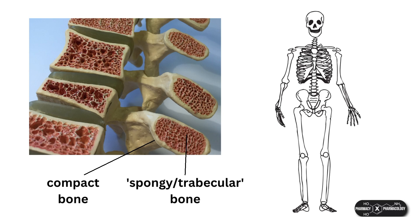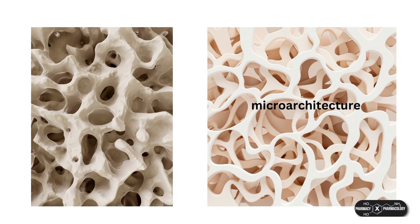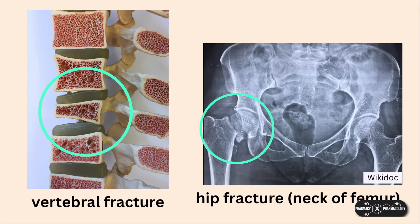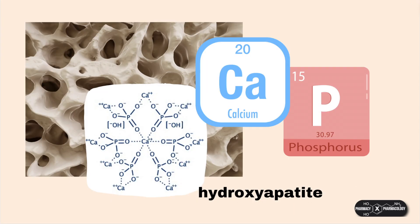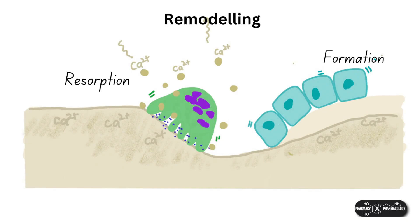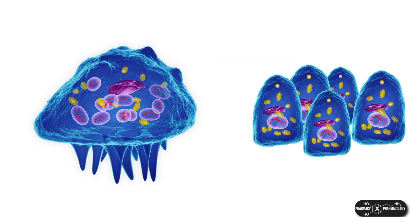The honeycomb structure of trabecular bone is often referred to as microarchitecture and enables the bone to be lighter whilst still providing strength, but is also often the site of osteoporotic fractures when bone density falls below critical levels. To keep things simple, I'm only going to be talking about trabecular bone, the role of the mineral calcium, and the bone cells involved in bone growth and remodeling.